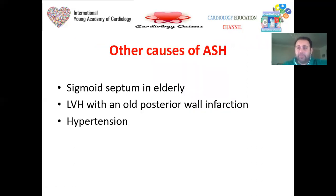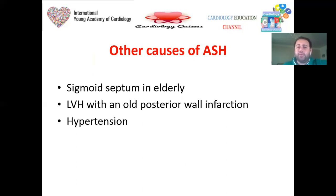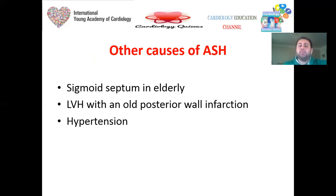The next step is LVOT assessment. Bear in mind that asymmetrical septal hypertrophy is not the hallmark or definition of HCM — it may occur in other diseases like sigmoid septum in the elderly, LVH with old posterior infarction, or hypertension with eccentric hypertrophy. So asymmetrical septal hypertrophy occurs in other diseases besides HCM, and not all patients with HCM have asymmetrical septal hypertrophy because of the many different morphological types.